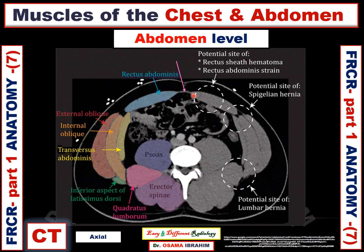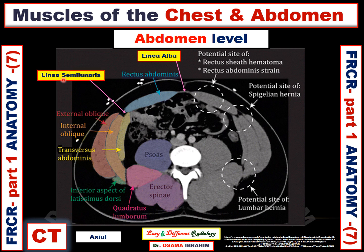This arrow refers to the linea alba between the two rectus abdominis muscles. This is the rectus abdominis muscle, which can show rectus sheath hematoma or rectus abdominis strain as the most common pathology in that region. This other arrow refers to the linea semilunaris, which is the potential site for a Spigelian hernia.